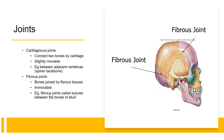Cartilaginous joints connect two bones by cartilage and are slightly movable. These joints are found between adjacent vertebrae in the spine or backbone. Fibrous joints are the third type of joints and are characterized by bones joined by fibrous tissues. These joints are immovable and are found in structures such as sutures between the flat bones of the skull.